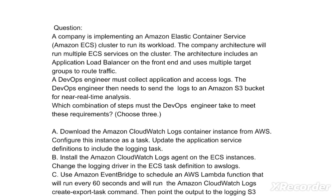A company is implementing an Amazon Elastic Container Service cluster to run its workload. The company architecture will run multiple ECS services on the cluster. The architecture includes an application load balancer on the front end and uses multiple target groups to route traffic. A DevOps engineer must collect application and access logs, then send the logs to an Amazon S3 bucket for near real-time analysis.